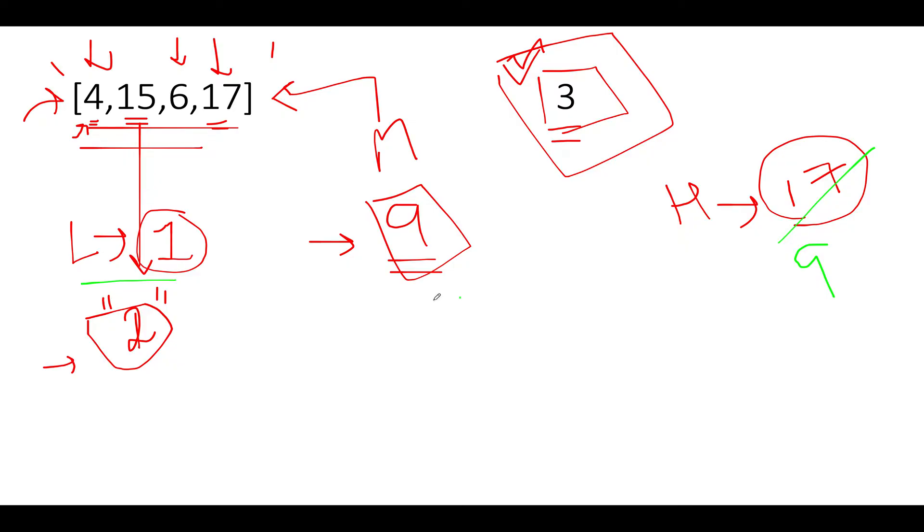Now low is pointing to 1, high to 9. Let's calculate the middle: 1 plus 9 by 2 gives 5. So let's assume we're interested in distributing 5 candies to each child. First pile is 4: 4 by 5 is 0, no contribution. Next is 15: 15 divided by 5 is 3, so 3 children can be supported. Next is 6: 6 divided by 5 gives 1, count updates to 4. Next is 17: 17 divided by 5 gives 3, so 3 plus 4 gives 7. That means 7 children in total can be supported, which is way greater than our target of 3.